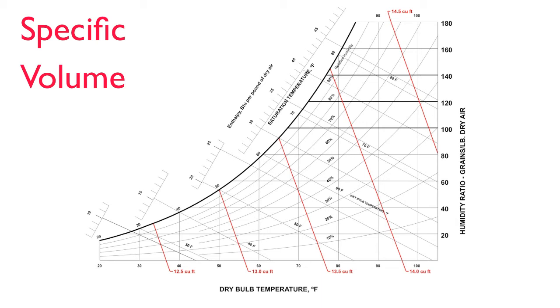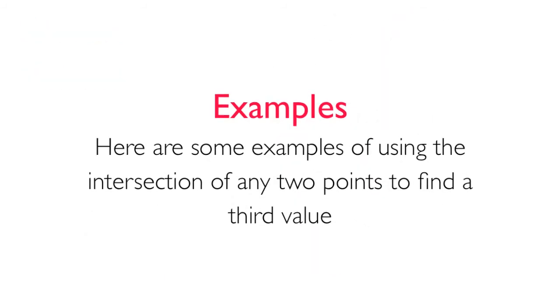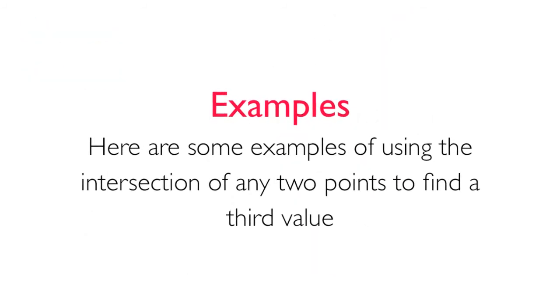Specific volume increases as the temperature and/or moisture increases. Here are some examples of using the intersection of any two points to find a third value.